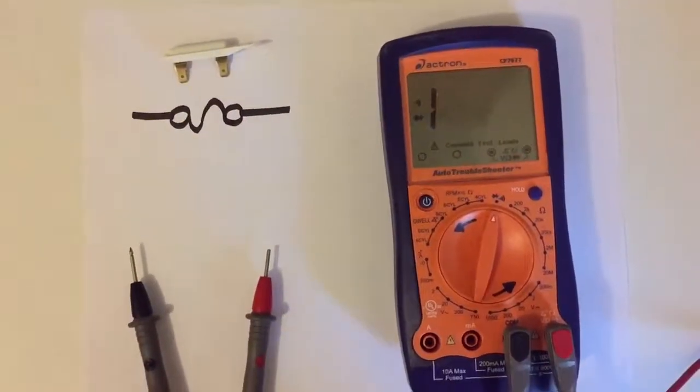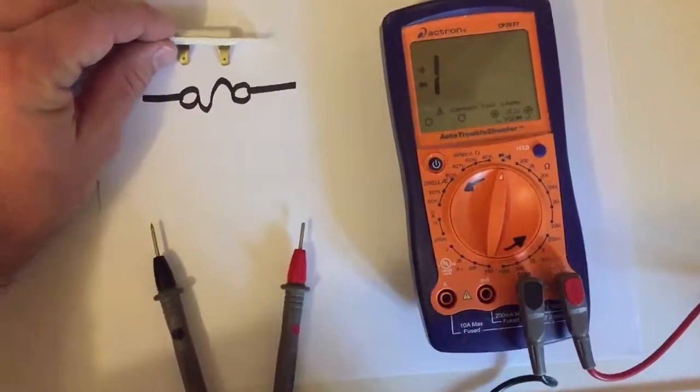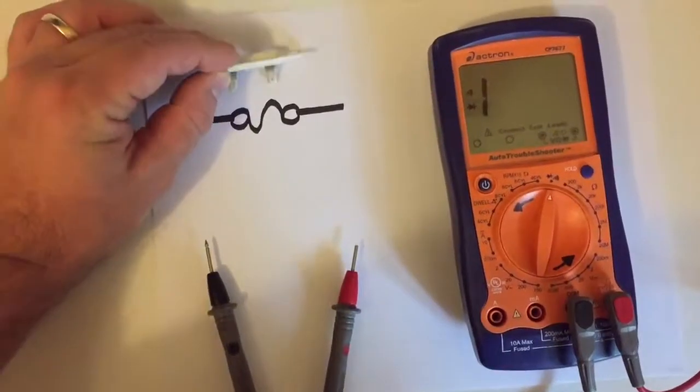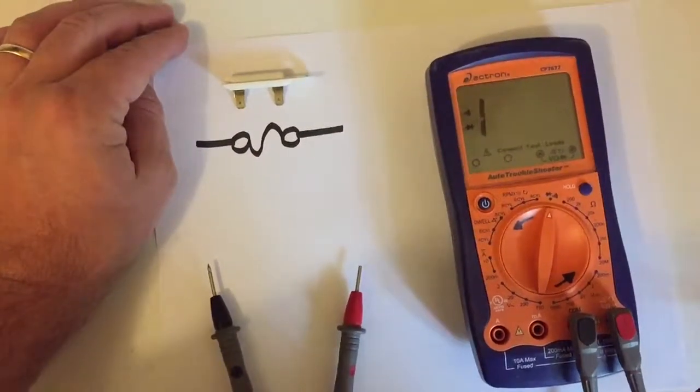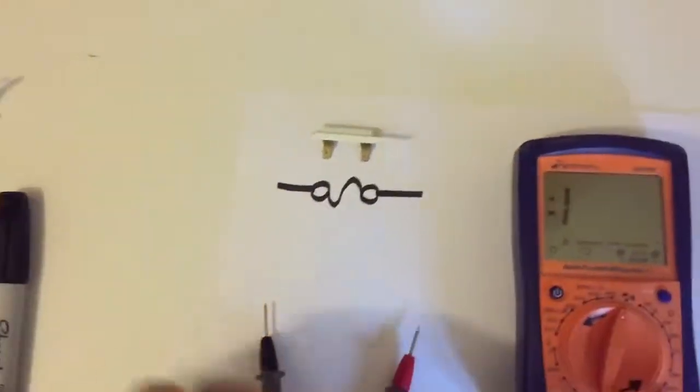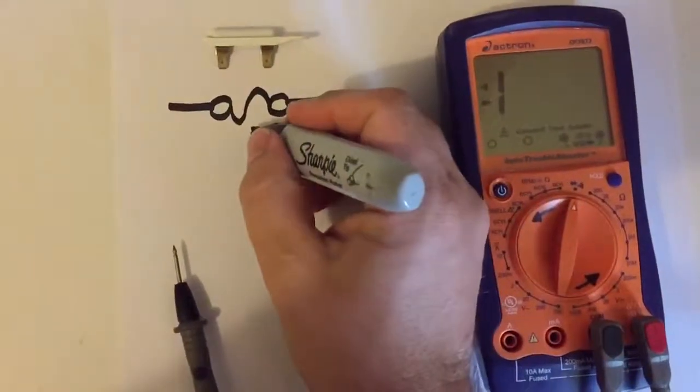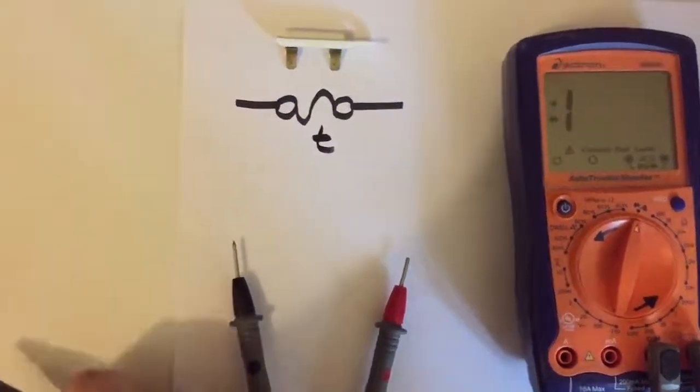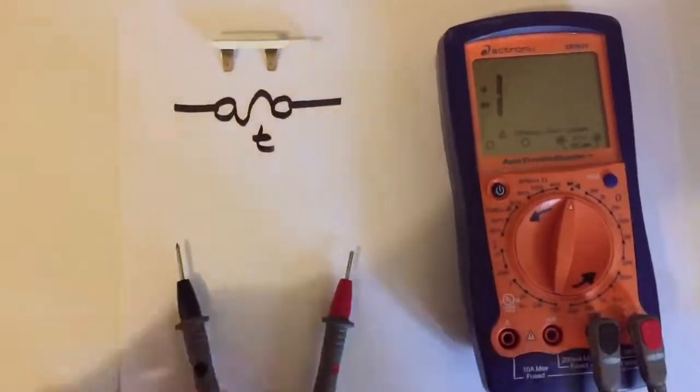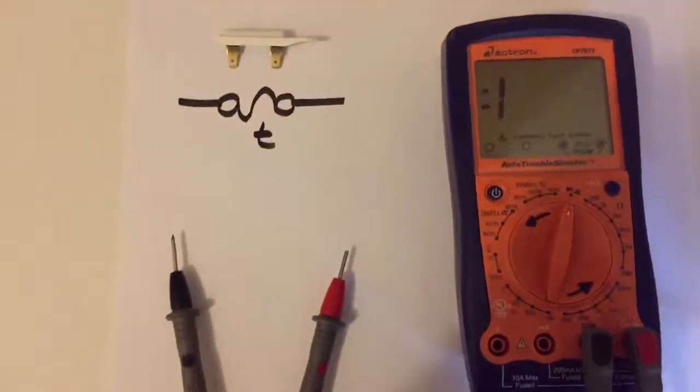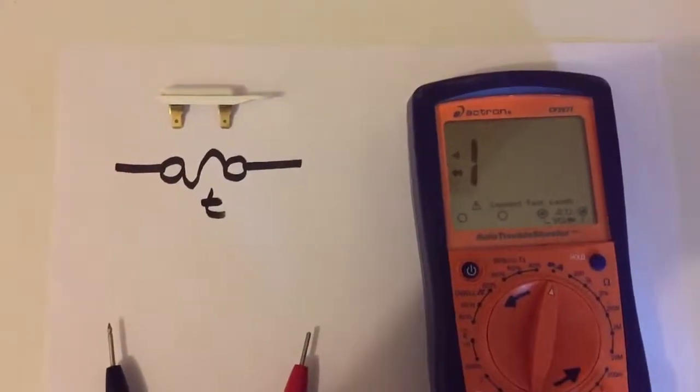The same way, a thermal fuse instead of it being an overcharge in current, is meant to interrupt the circuit if there is a surge in temperature above the standard or whatever the fuse is set for. These are most popular in dryers.